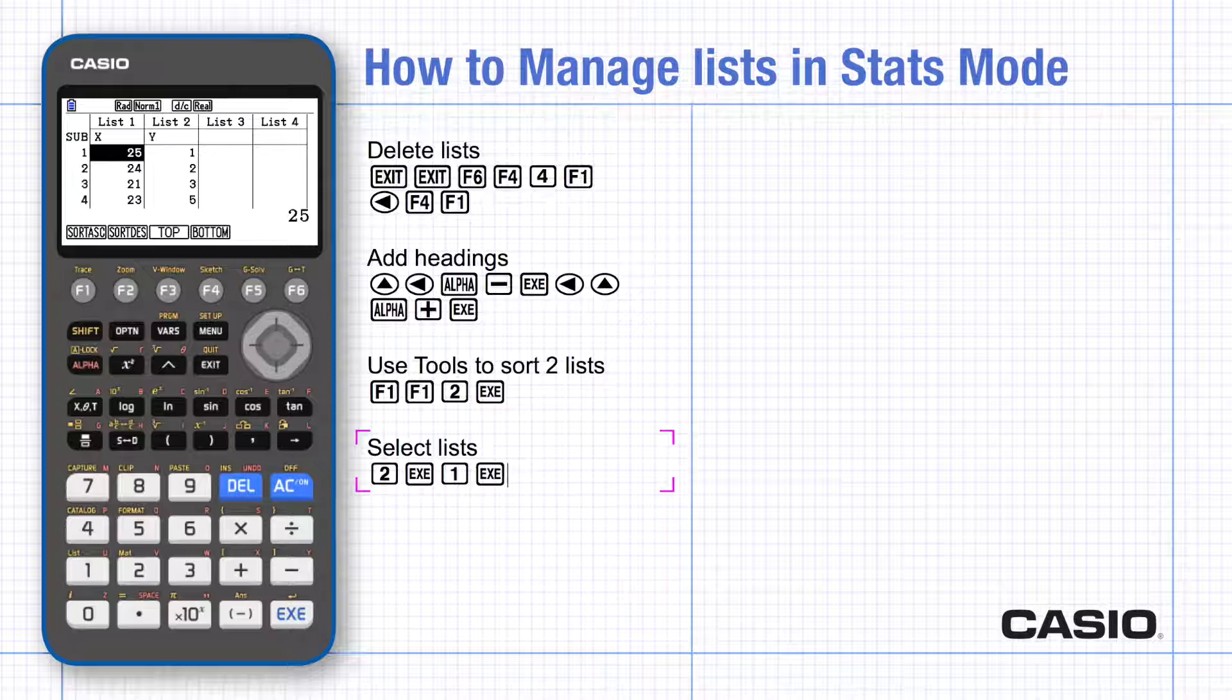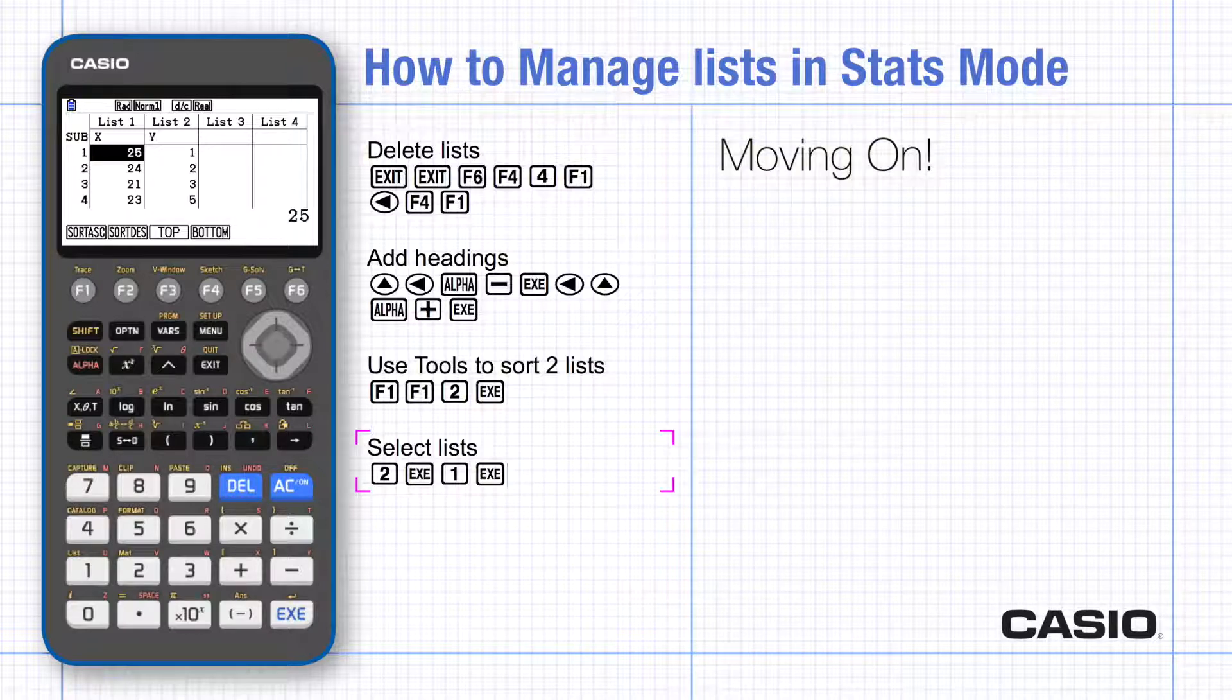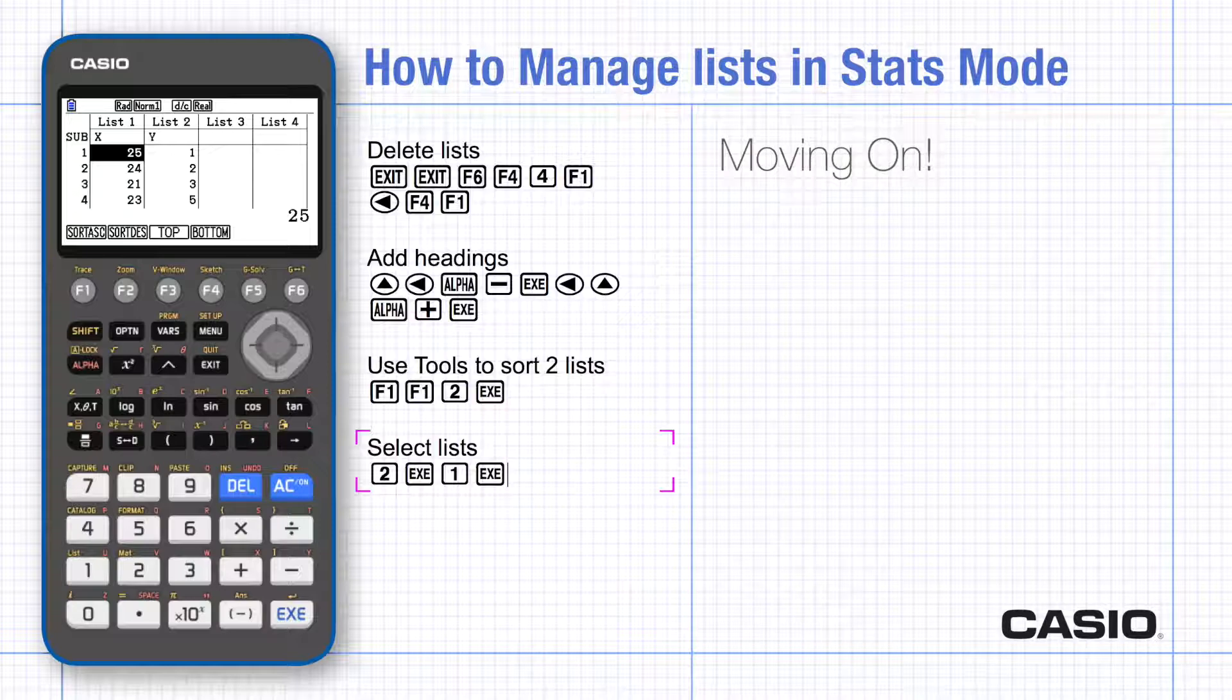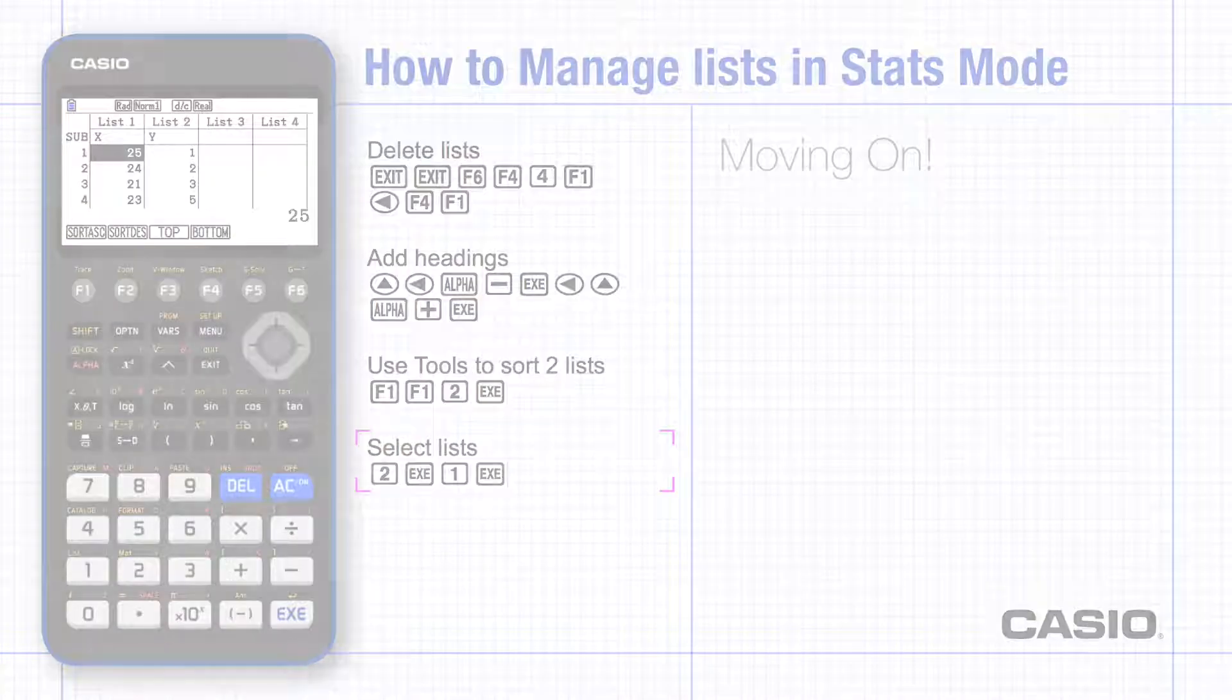We will look at how to import data from a PC and how to save data typed into the calculator in the document that supports this video tutorial. Instructions on how to perform the calculations and draw the graphs can be found in other video tutorials. You can find additional resources at education.casio.co.uk.